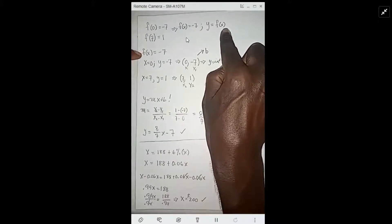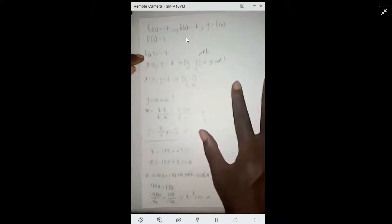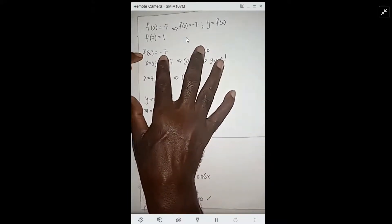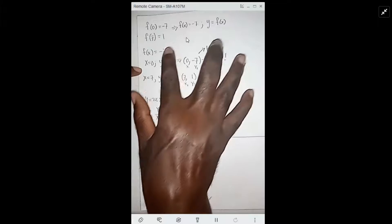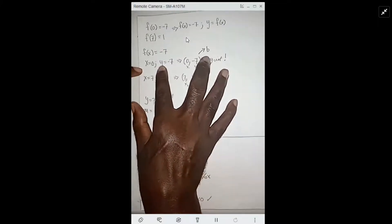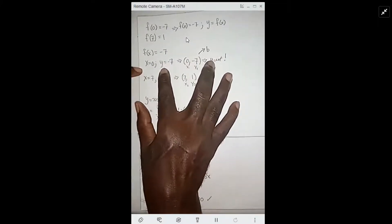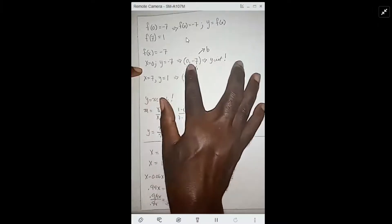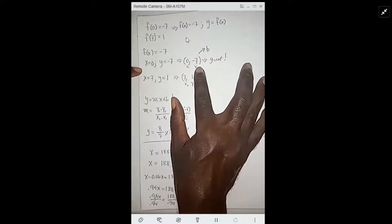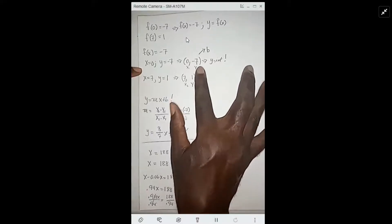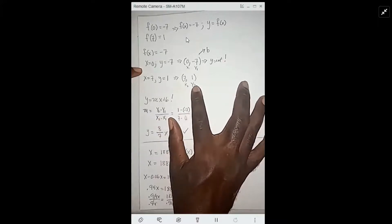When x equals 0, f(x) equals -7. We know y equals f(x), so when x equals 0, y equals -7. That gives us a point (0, -7). That's your ordered pair. Once we get this second ordered pair, we can find the slope.